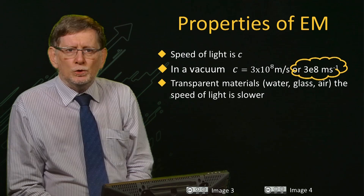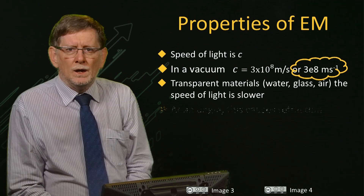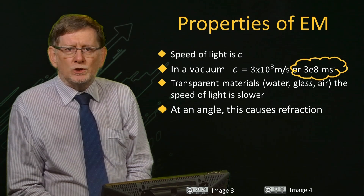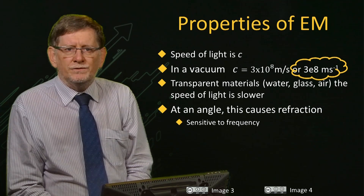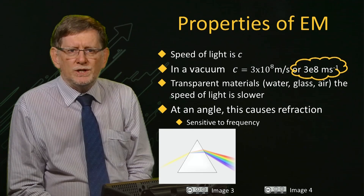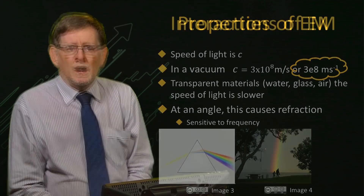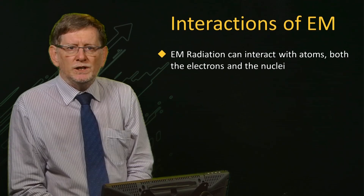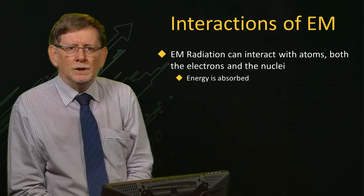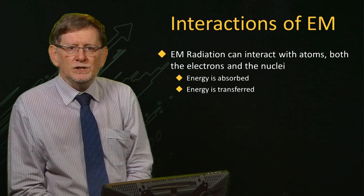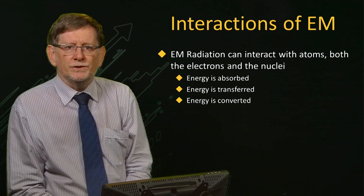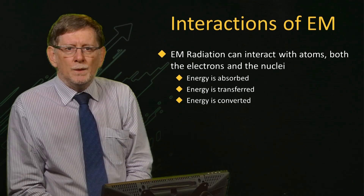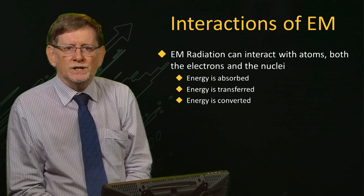When electromagnetic radiation moves into transparent materials, it slows down. This is important because it results in refraction, which causes the radiation to bend. The degree to which it slows down is dependent on the frequency, and it is very sensitive. We have all observed the diffraction of light by a prism, or even a rainbow. EM radiation can also interact with the electrons and nuclei in a material to cause it to be absorbed. This energy can be transferred to the electron or the nucleus, or converted to another form of energy such as heat. We will discover later that transparency and absorption are functions of frequency, or alternatively the energy of the photons — so something that is not transparent to visible light may be transparent to EM radiation at a higher frequency, such as X-rays.